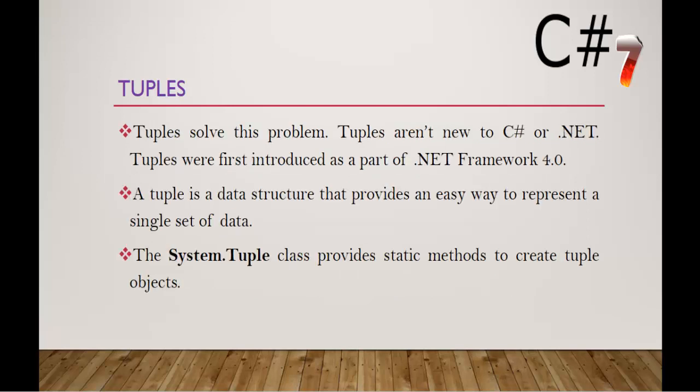Tuples solve this problem. Tuples are not new to C# or .NET — they were first introduced as part of .NET Framework 4.0. A tuple is a data structure that provides an easy way to represent a single set of data. For example, if you want to return multiple values from a single variable, you can achieve that with the help of a tuple. This tuple is present in a namespace called System.Tuple.